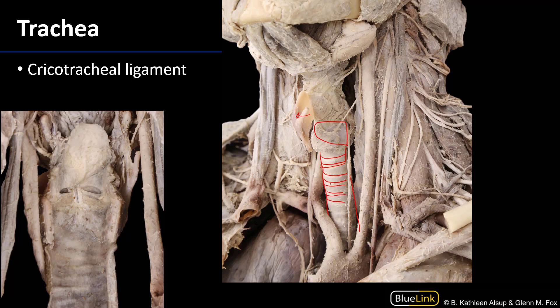The inferior margin of the larynx is about C6, and where the primary bronchi bifurcate is about T4 or T5 — that's about at the sternal angle, which is the boundary between the superior mediastinum and the remainder of the mediastina. There are approximately 16 to 20 of these C-shaped hyaline cartilage rings.